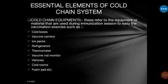The vaccine carrier is used for transporting vaccines during mass campaigns like polio campaigns. The cold box is bigger than the vaccine carrier and can carry more vaccines. Both are essential for maintaining the cold chain during outreach.